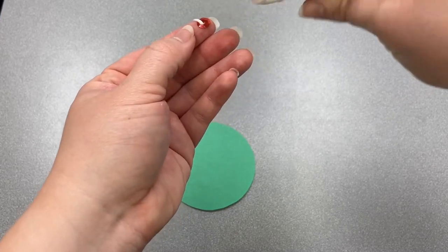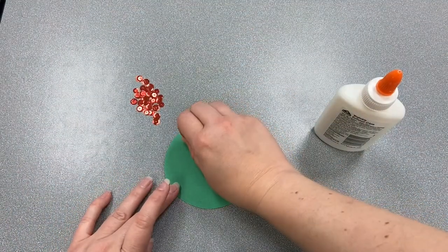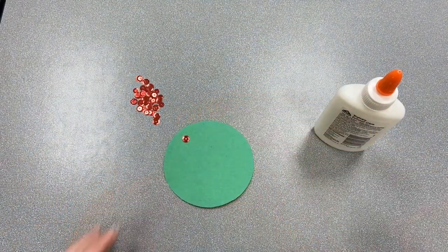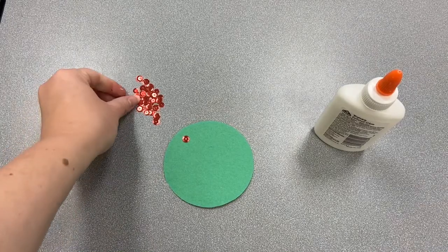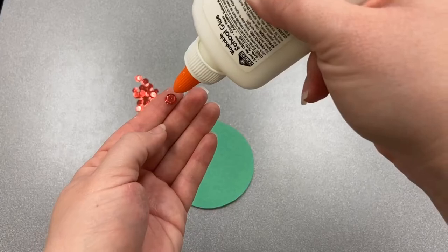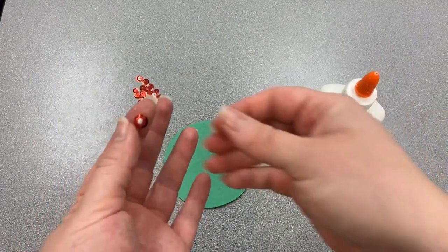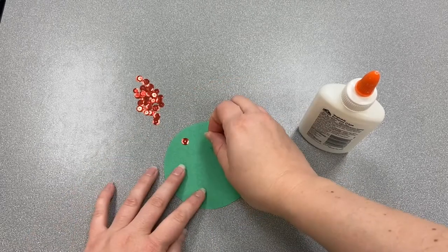Then you can just stick it wherever you like on the tree. There's our first apple. You can do another one. Put a little dot of glue and stick it right there.